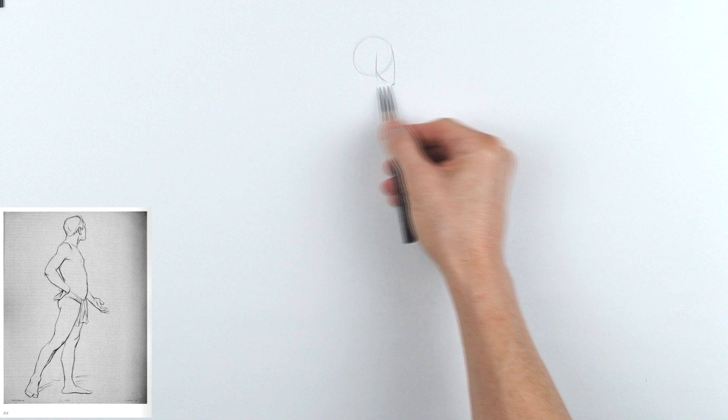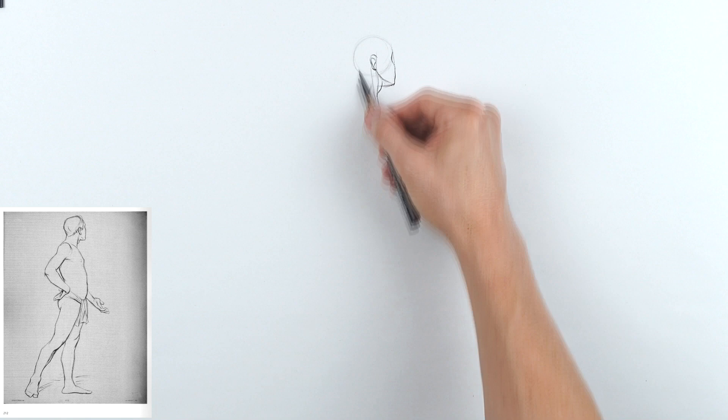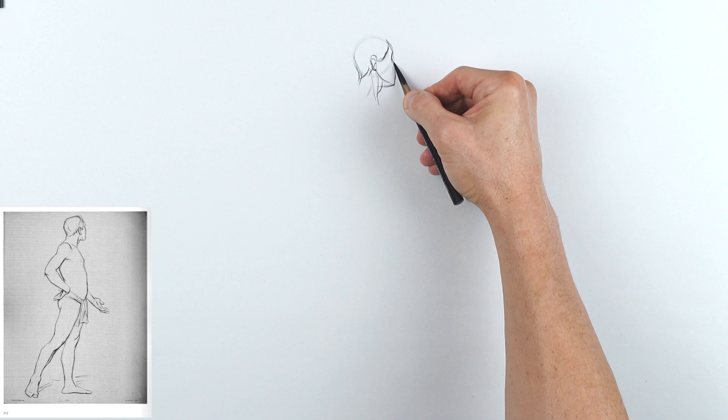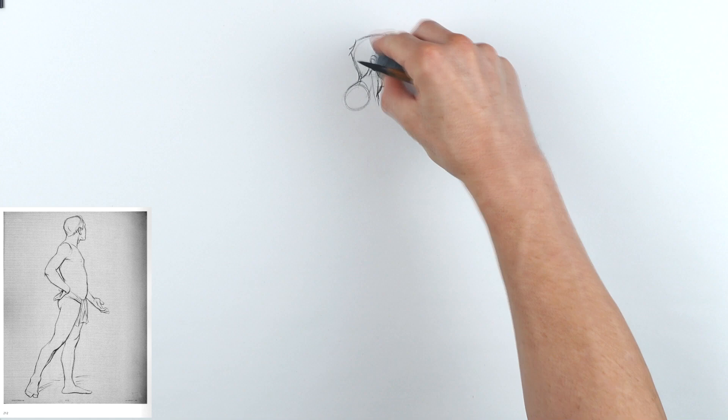He's already done all the hard work for us. He's drawn these out from a model or maybe it's invented, but either way he's done all the design. So all we have to do is copy it, and just through the copying we get to really appreciate the subtleties of the form and design.